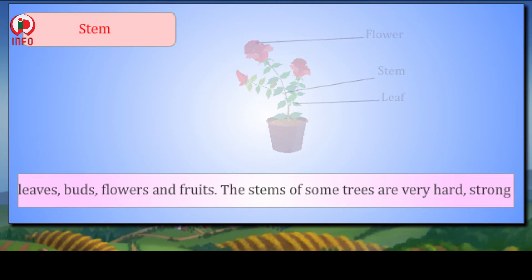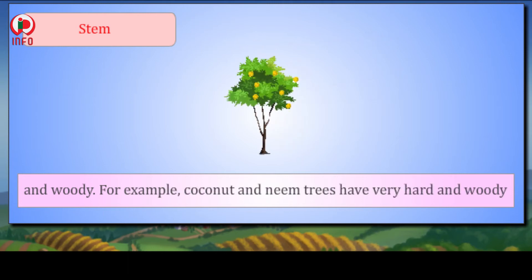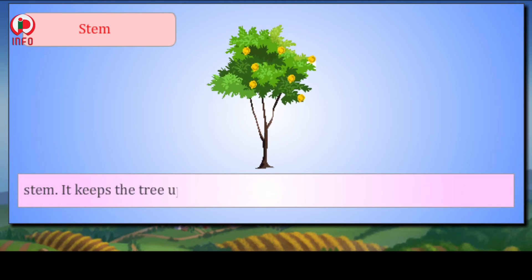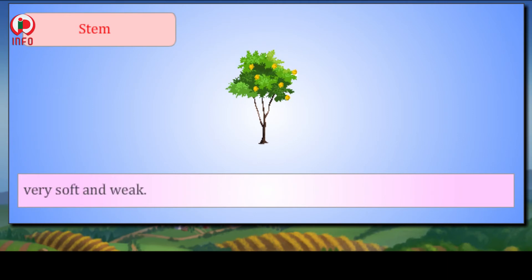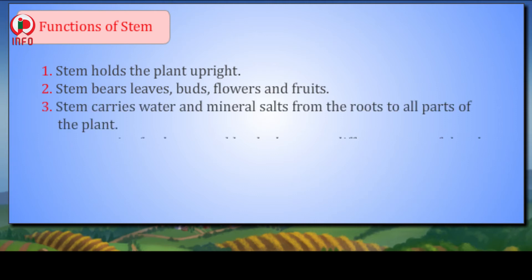The stems of some trees are very hard, strong, and woody. For example, coconut and neem trees have very hard and woody stems. It keeps the tree upright. The stem of some plants like money plant is very soft and weak. Functions of stem: 1. Stem holds the plant upright. 2. Stem bears leaves, buds, flowers, and fruits. 3. Stem carries water and mineral salts from the roots to all parts of the plant. 4. Stem carries food prepared by the leaves to different parts of the plant.